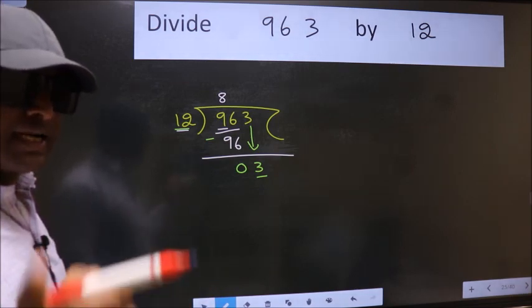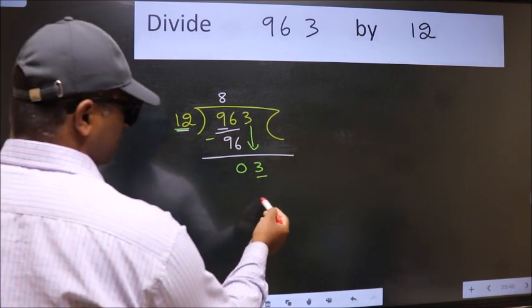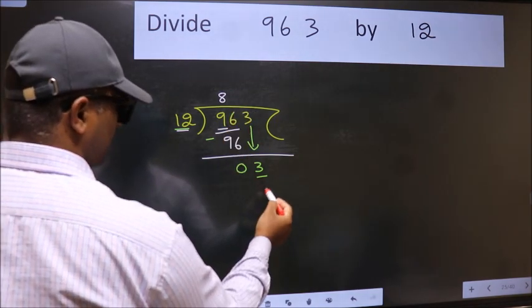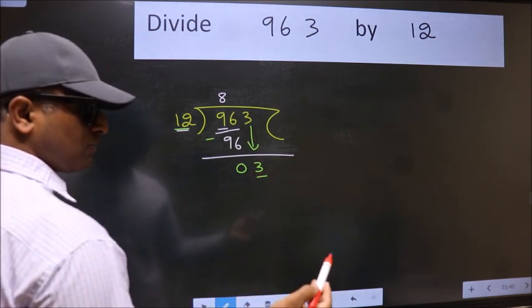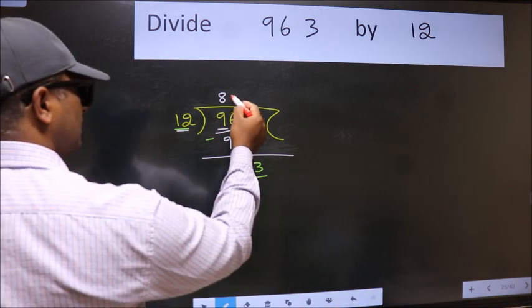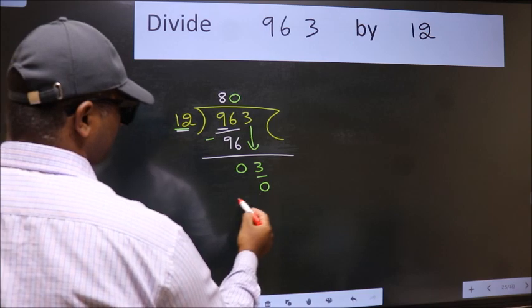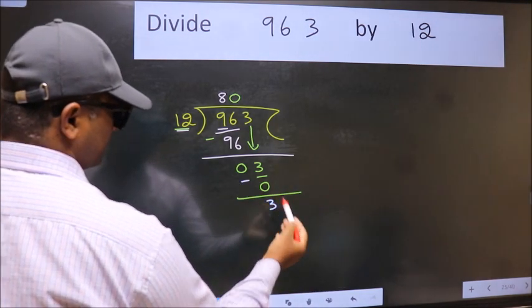Instead of that, what we should think of doing is which number should we take here? If I take 1, we will get 12, but 12 is larger than 3. So what we do is we take 0 here. So 12 into 0 is 0.